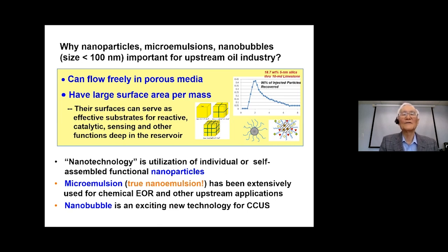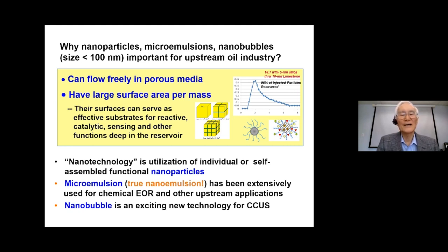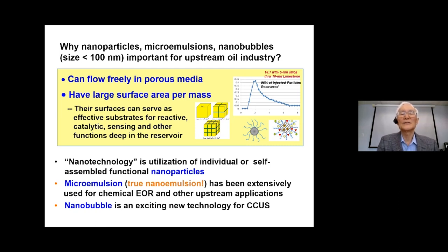Nanodispersions can have very large surface area per mass because as size becomes smaller, surface area increases drastically. The surface can serve as effective substrates for reactive, catalytic, sensing, and other functions deep in the reservoir. For example, you can attach chemicals to nanoparticles, or make a nanoparticle selectively absorb certain chemicals deep in the reservoir and then retrieve the data.